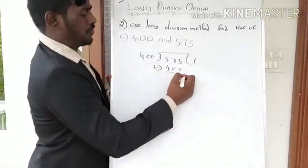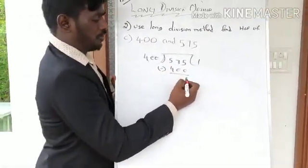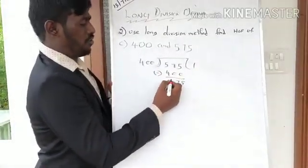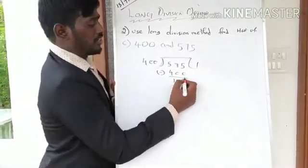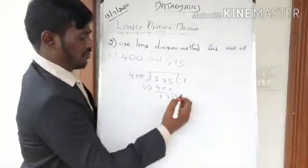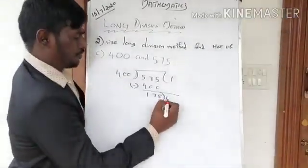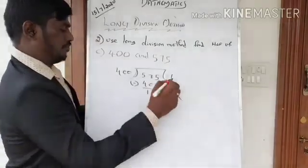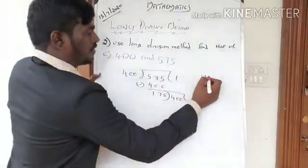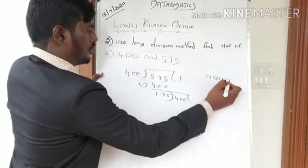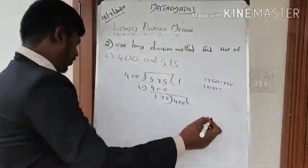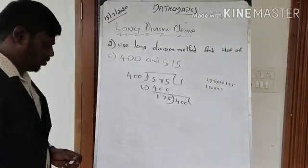400 goes into 575 once — 400 ones are 400. Subtract: 5 minus 0 is 5, 7 minus 0 is 7, 5 minus 4 is 1. The remainder is 175. This remainder 175 now changes to the new divisor, and 400 becomes the new dividend.